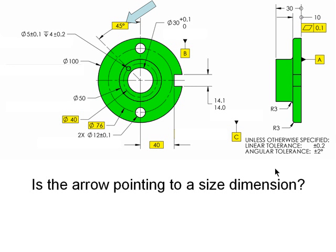As the arrow moves around the slide, ask them to answer the question, is the arrow pointing to a size dimension? When you first click on the mouse, Bean will appear shrugging his shoulders. Of course, the first one is pointing to a basic 45 degree angle, which would not be a size dimension.